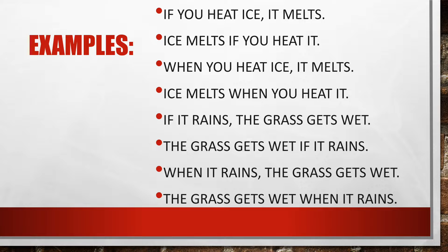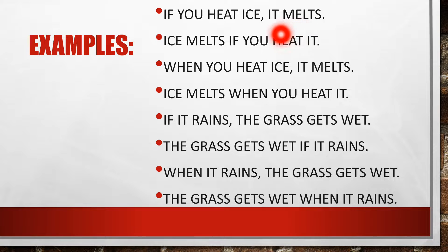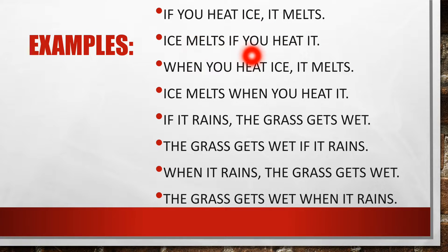Let's look at some examples. If you heat ice, it melts. The verb in the if clause is 'heat' and in the result clause is 'melts'. The if clause is the dependent clause because it doesn't communicate complete sense — 'If you heat ice' is not a complete sentence. 'It melts' is an independent clause and can stand alone as a coherent sentence. When the if clause is at the start of the sentence, it is followed by a comma. But when it comes at the end of the sentence, there is no comma. Ice melts if you heat it.